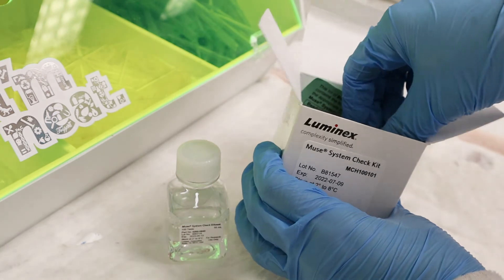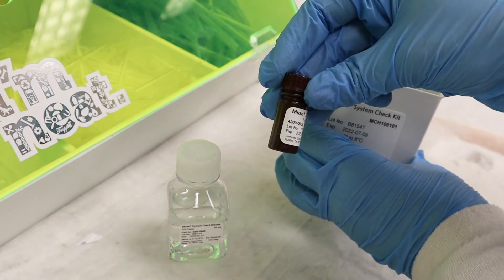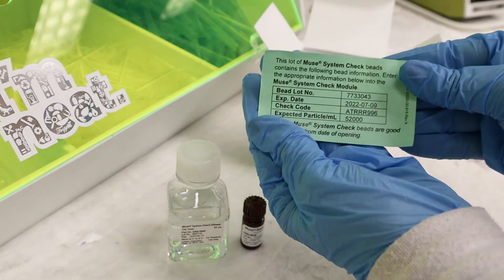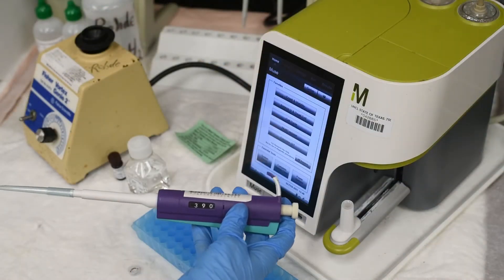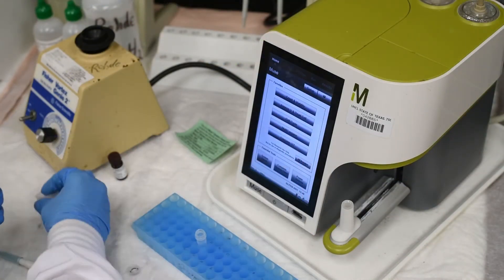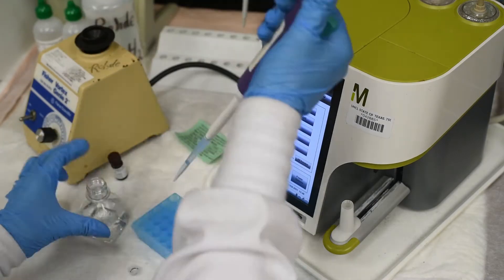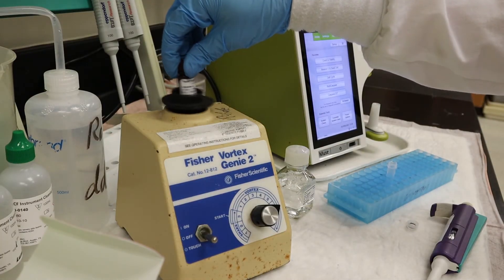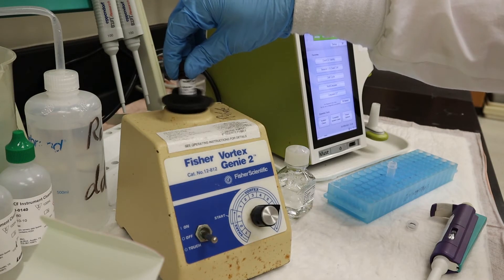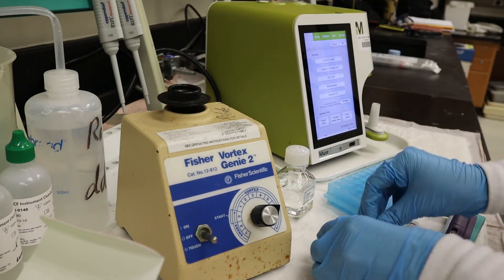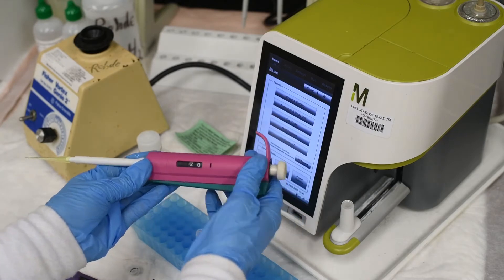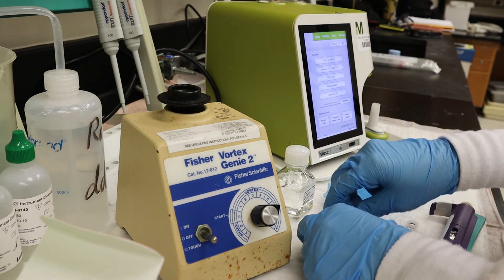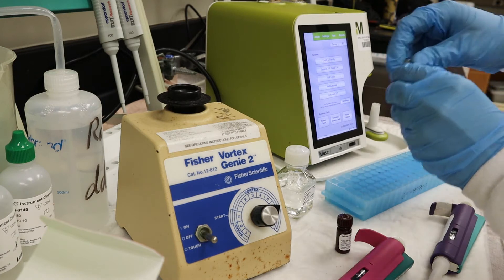Before beginning the check, the Muse system check kit comprised of diluent and beads needs to sit at room temperature for 30 to 60 minutes. Each kit contains a card with the lot information for the beads you will be using that will need to be entered into the dialog menu when running the system check. Using a pipette, transfer 390 microliters of diluent into a 2-milliliter tube. Keep the cap for the tube nearby. Vortex the beads in their original bottle for at least 15 seconds, then transfer 20 microliters of beads to the 2-milliliter tube containing the diluent. Place the cap on the tube and vortex the diluent and beads together.